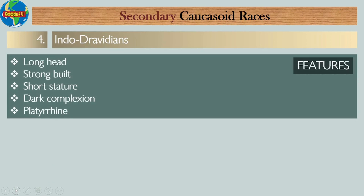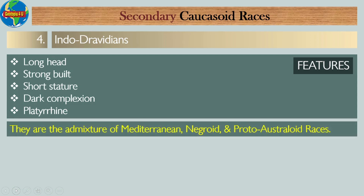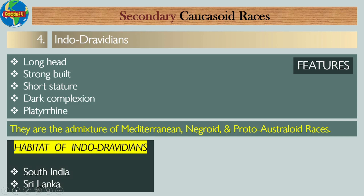Number four: Indo-Dravidian race. Their features include: they are long-headed; they are strongly built; they have a short stature; they have a dark complexion; and they are platyrrhine in nature. They are an admixture of Mediterranean, Negroid, and Proto-Australoid races. The habitat of Indo-Dravidians includes the southern states of India — Karnataka, Tamil Nadu, Kerala, and Andhra Pradesh — and they are also found in Sri Lanka.